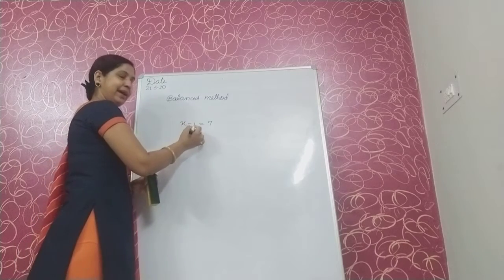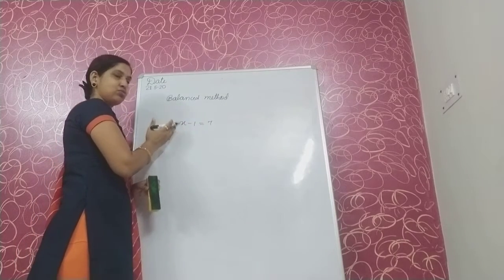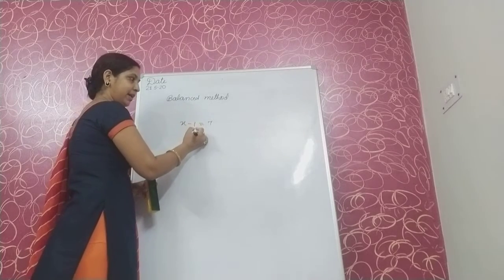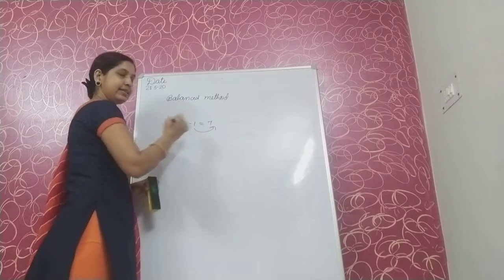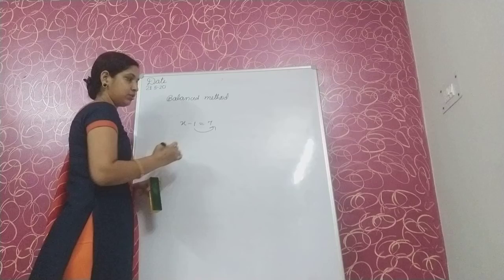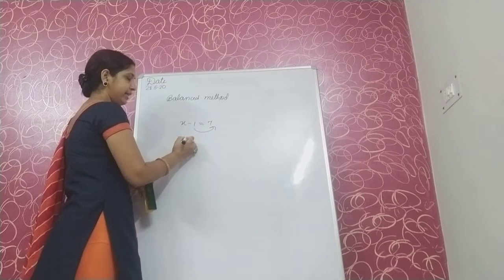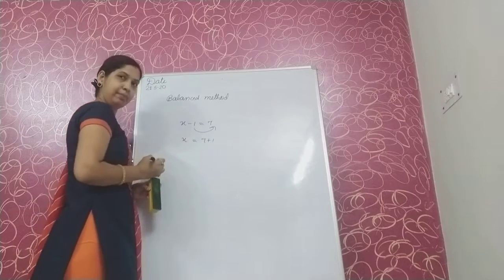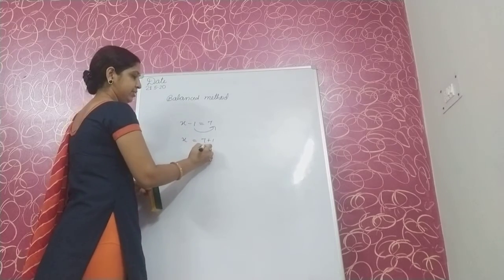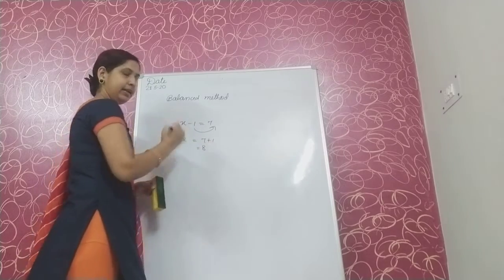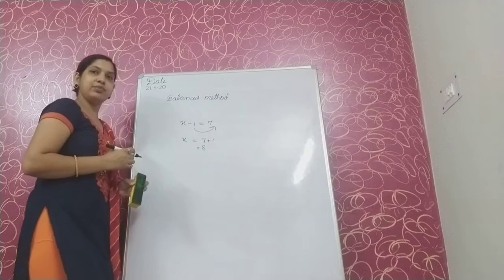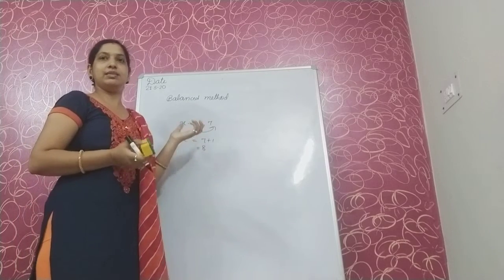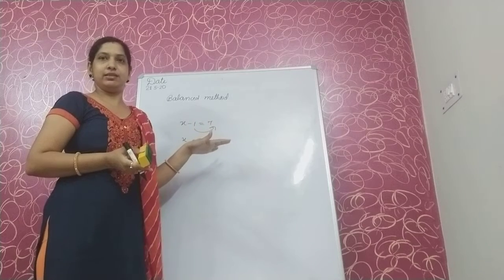For example, x minus 1 is equal to 7. If the variable has minus 1, then we transpose it to the right side where it becomes plus 1. So 7 plus 1 gives x equal to 8. We can do either balance method or transpose method.